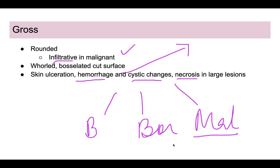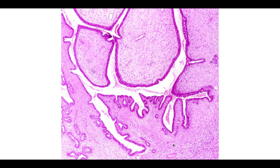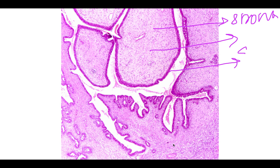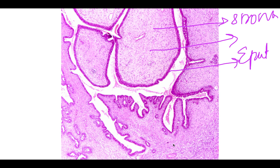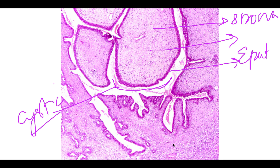On microscopy, the characteristic feature is the leaf-like pattern. There is stromal overgrowth — the stroma proliferates so much that it gives a leaf-like appearance, with epithelial lining over the stroma. Cystic changes can also be seen, where the projections appear to protrude into a cystic space.